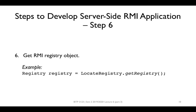In step 6, we need to get the RMI Registry object. To get the RMI registry, we use getRegistry from the class LocateRegistry. This method will return a Registry object. In our example, we have an object named registry.